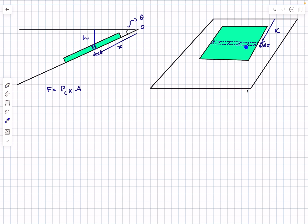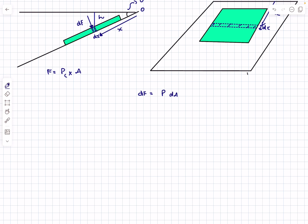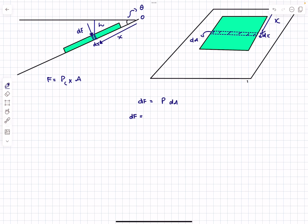Each point along the surface experiences the same water pressure. The force dF acting on this small element due to the liquid is normal to the surface. We can write dF as the pressure at that location times dA, where dA is the area of the small element. I'm considering only gauge pressure because atmospheric pressure p0 acts everywhere equally — its net contribution to force is zero. So pressure is taken as ρgh, and h equals x·sin θ multiplied by dA.